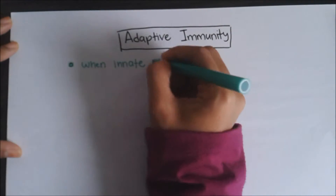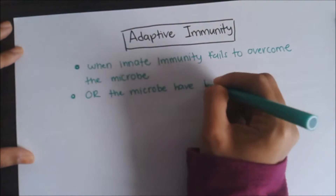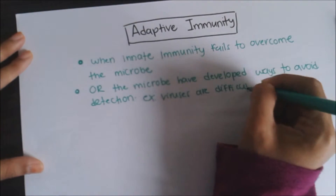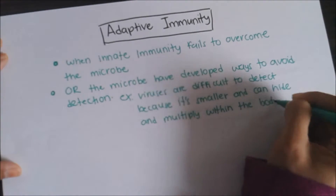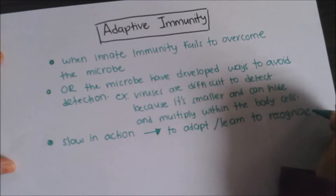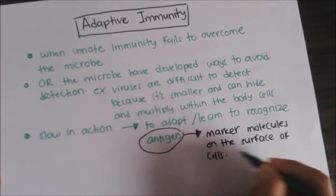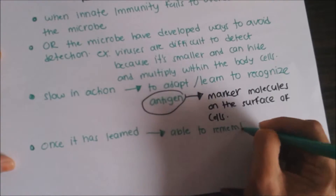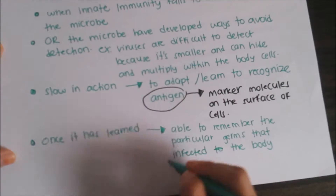Adaptive immunity takes place when innate immunity fails to overcome the microbe, or when the microbe has developed ways to avoid detection. For example, viruses are very difficult to detect because they are smaller and can hide and multiply within body cells. Unlike the innate immune system, adaptive immunity is slow in action, as it takes time to adapt or learn to recognize the antigen — the marker molecules on the surface of the cells. Once it has learned, it is able to remember the particular germs that infected the body. The response is then rapid, accurate and effective.